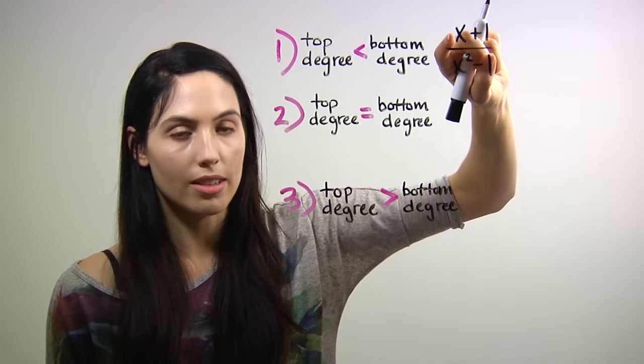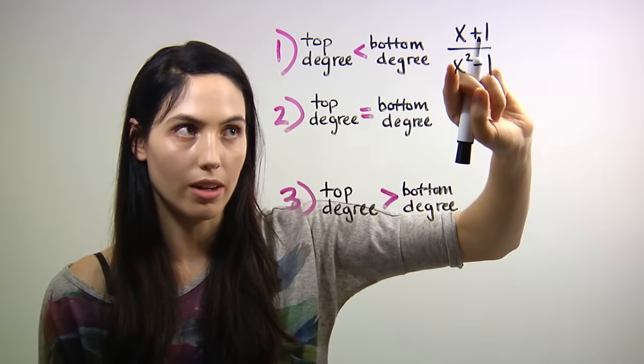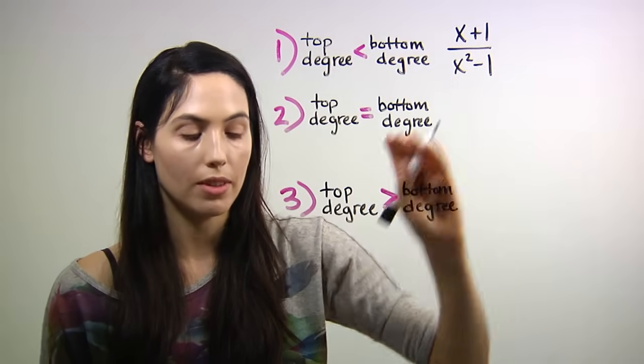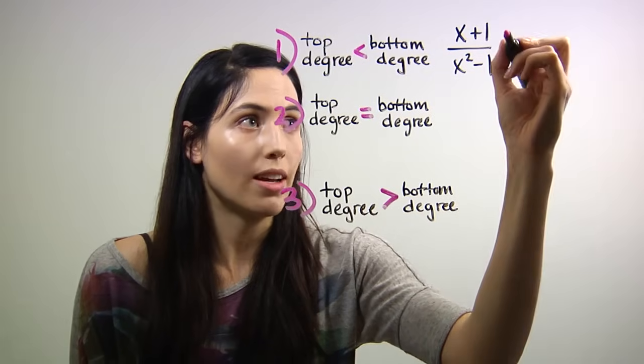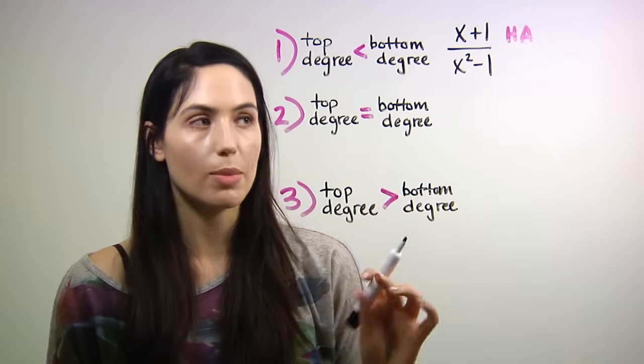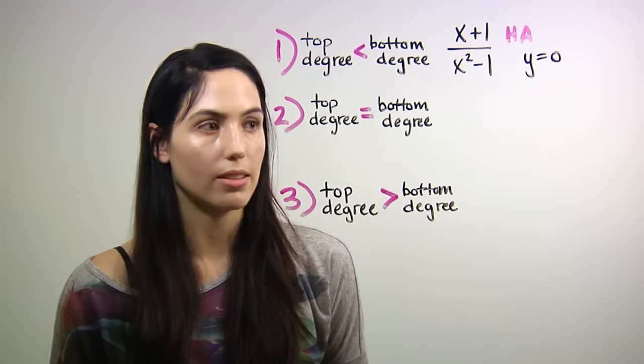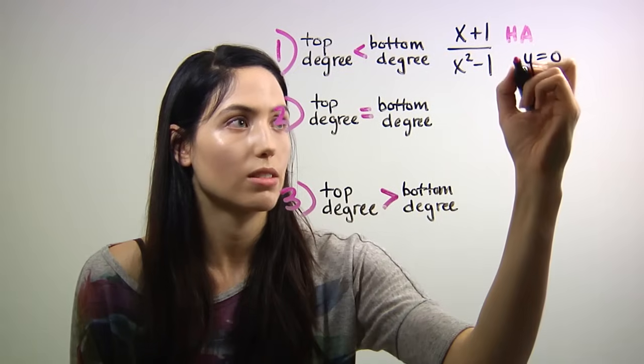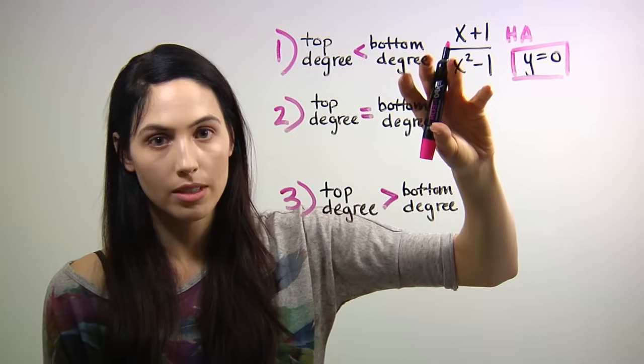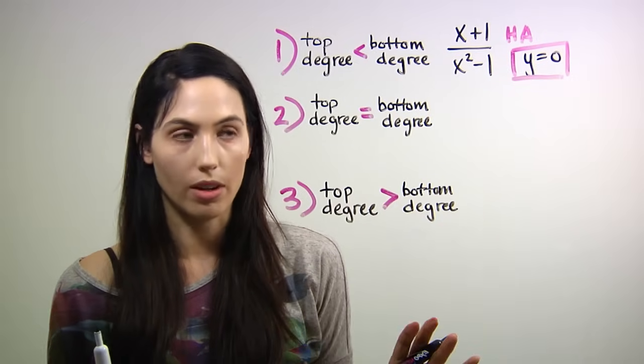So in this case, degree on top is 1 for the x and 2 for the x squared. So if your degree on top is less than the degree on the bottom, then your horizontal asymptote will always be y equals 0, which is the x-axis. So that would be the answer. Whenever the degree on top is less than the degree in the denominator, your horizontal asymptote is y equals 0.